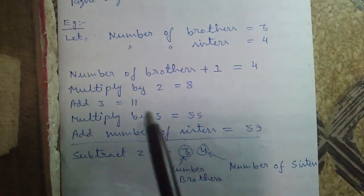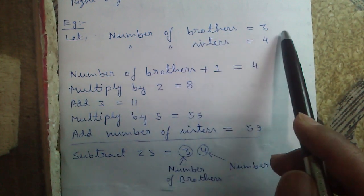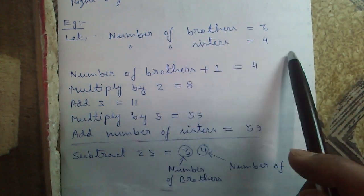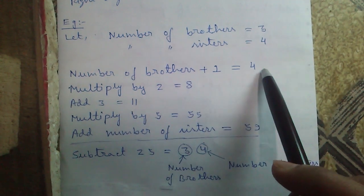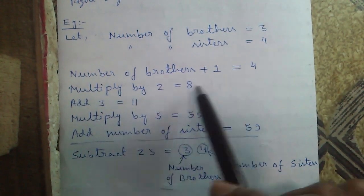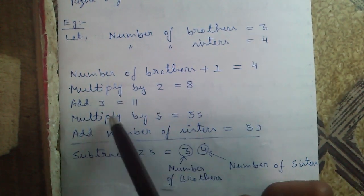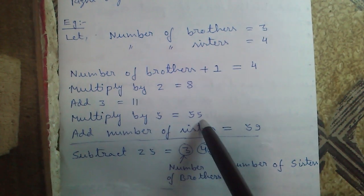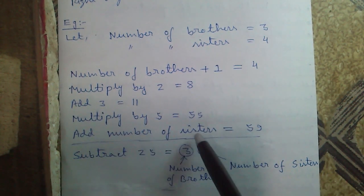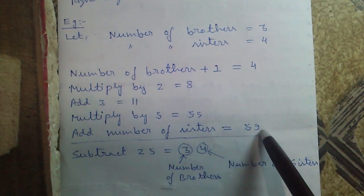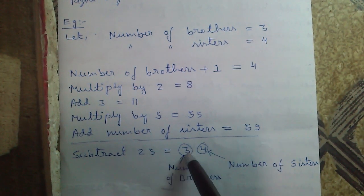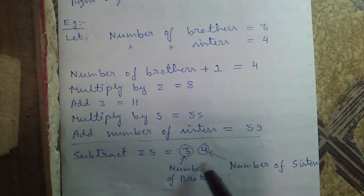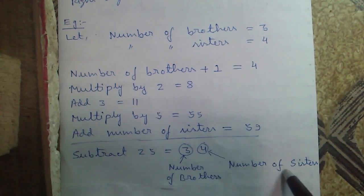For example, say number of brothers is 3 and number of sisters is 4. So: brothers plus 1 equals 4, multiply by 2 equals 8, add 3 equals 11, multiply by 5 equals 55, add number of sisters equals 59. Now subtract 25 from 59 — you get 34. So 3 indicates number of brothers and 4 indicates number of sisters.